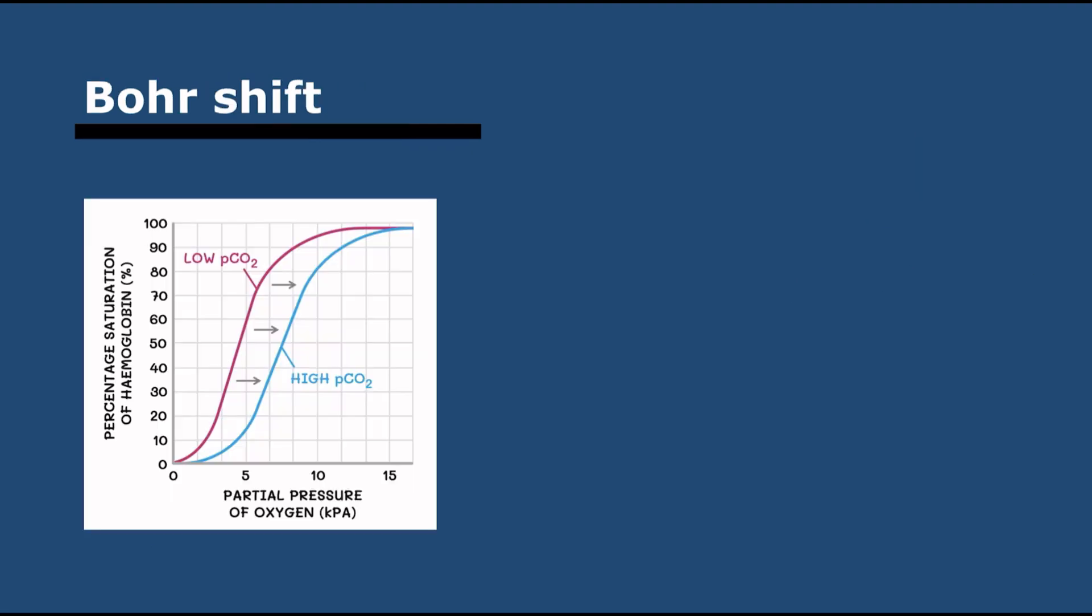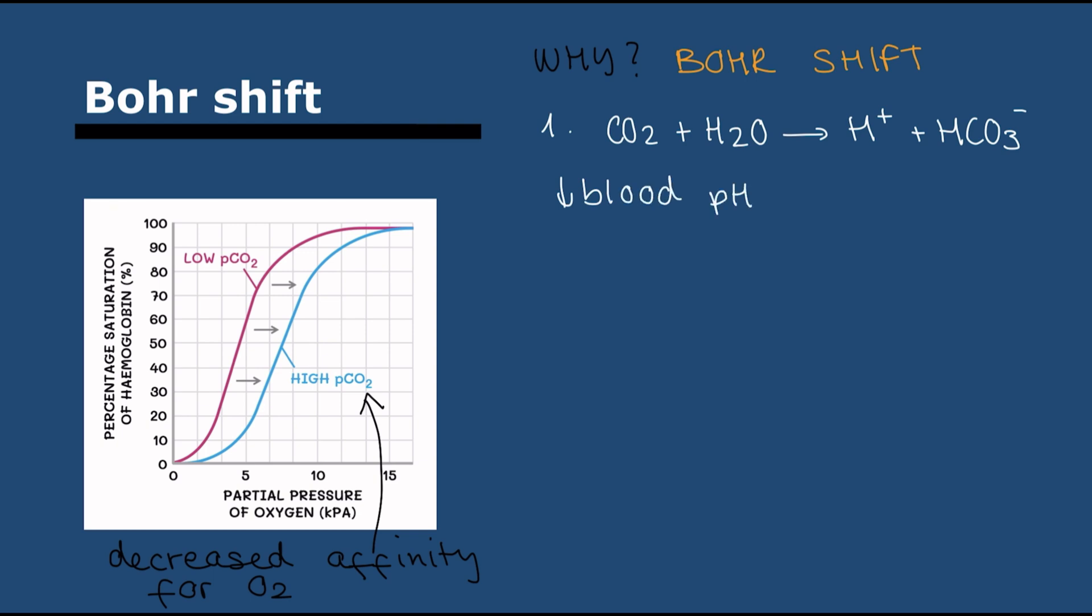Then we have the Bohr shift. It means that when there's high concentrations of CO2, hemoglobin has a lower affinity for oxygen. Why? Because when you have super high CO2, it means cells have been doing a lot of respiration, so they need more oxygen. Therefore you need oxygen to dissociate from hemoglobin so it will actually go into cells.